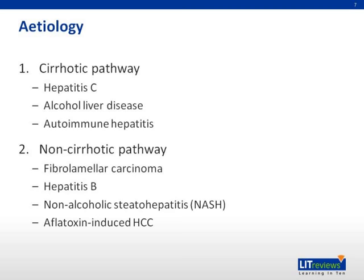In hepatitis B, integration of the viral genome into infected cells can directly induce HCC despite the absence of cirrhosis. Aflatoxin is a potent carcinogen produced by certain Aspergillus species of fungus that causes carcinogenesis in the liver.